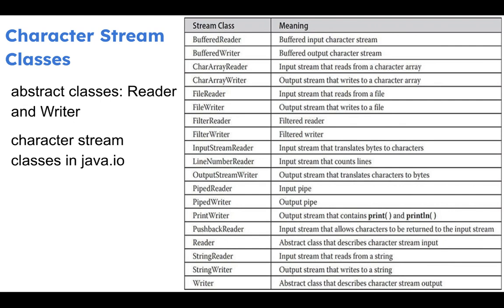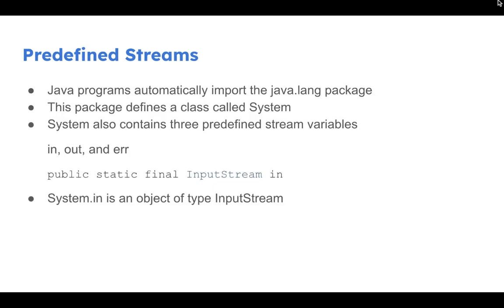We can also use character-based input and output in the form of character streams, where the primary abstract classes are Reader and Writer. Character streams are also provided through the java.io package. Just as with byte streams, all classes handling data input or output in character form are subclasses of Reader and Writer. We can read and write from files in character-oriented manner, read and write to arrays, handle strings, and also work in a buffered manner with character streams. This covers the primary concepts of handling input and output through streams.